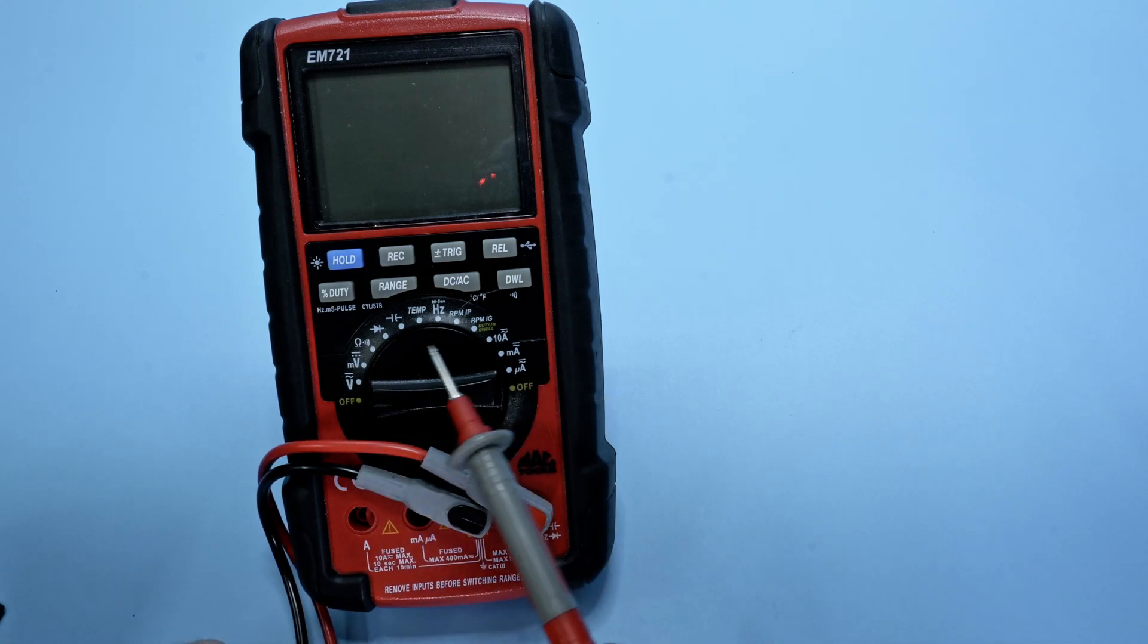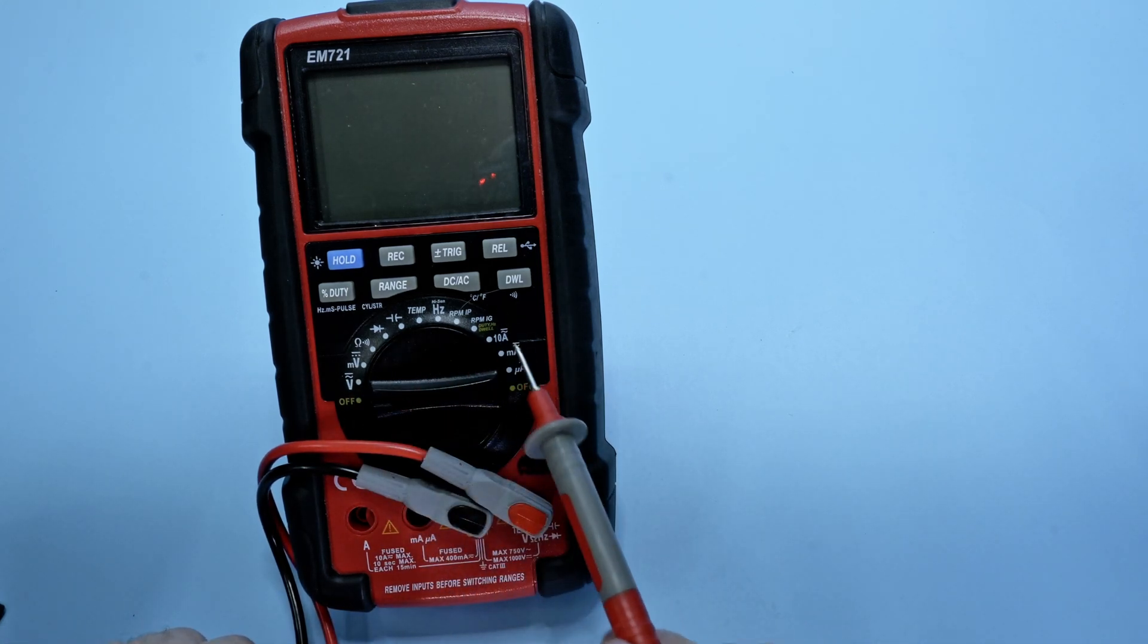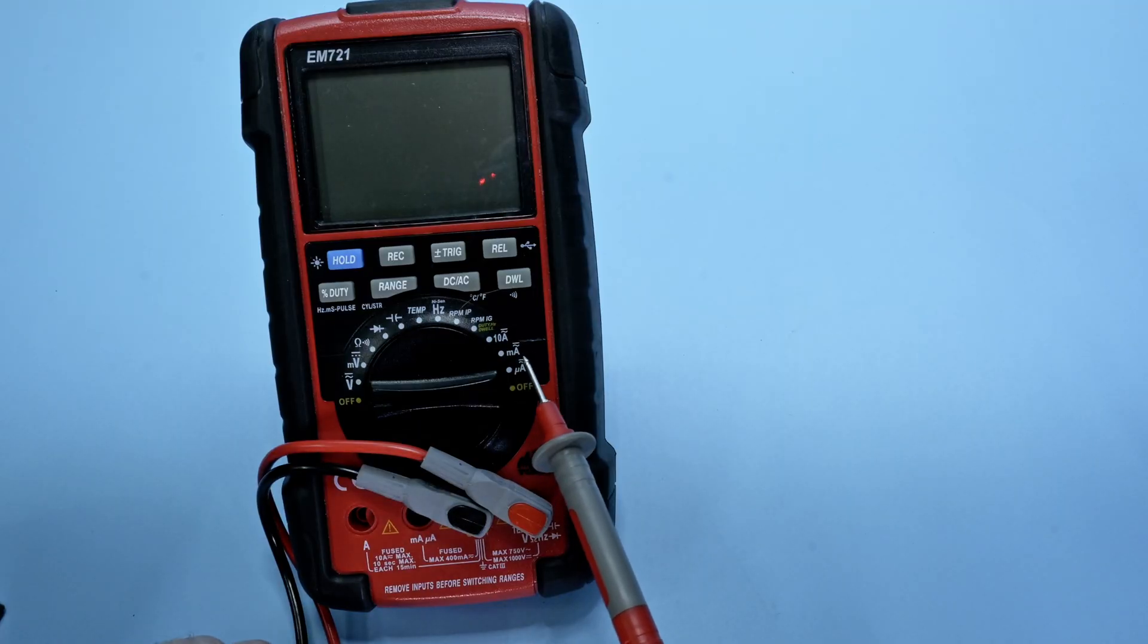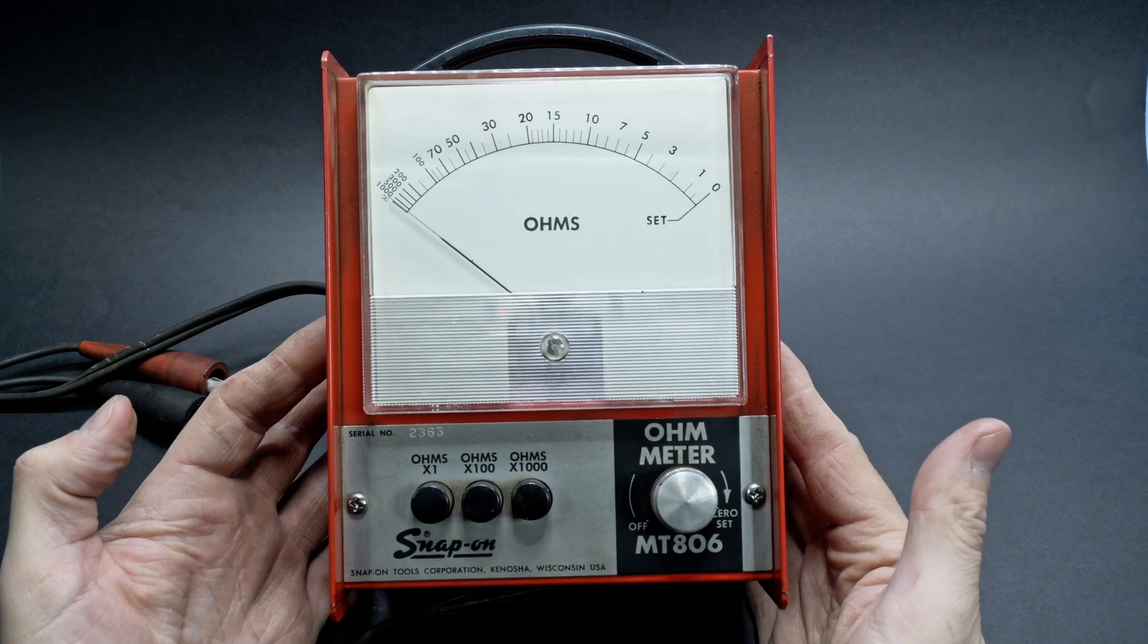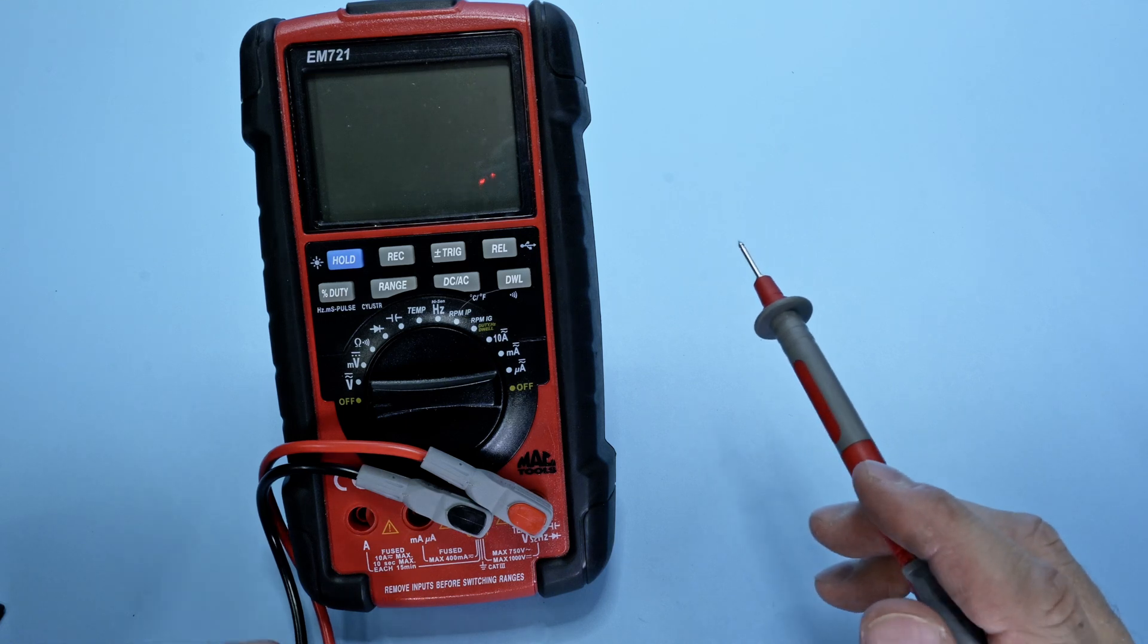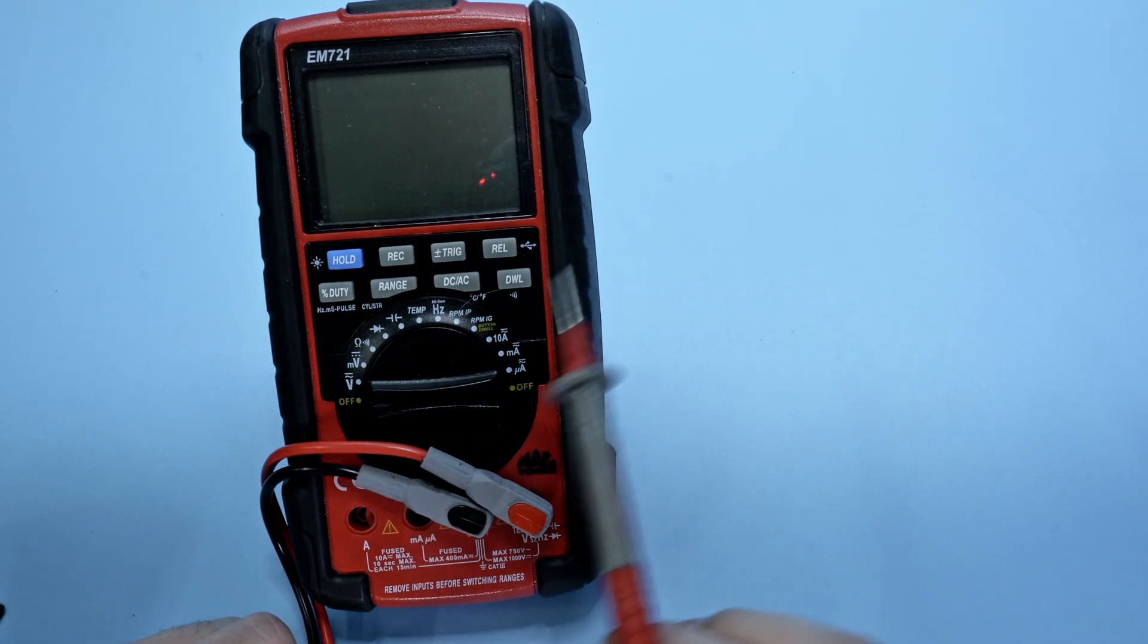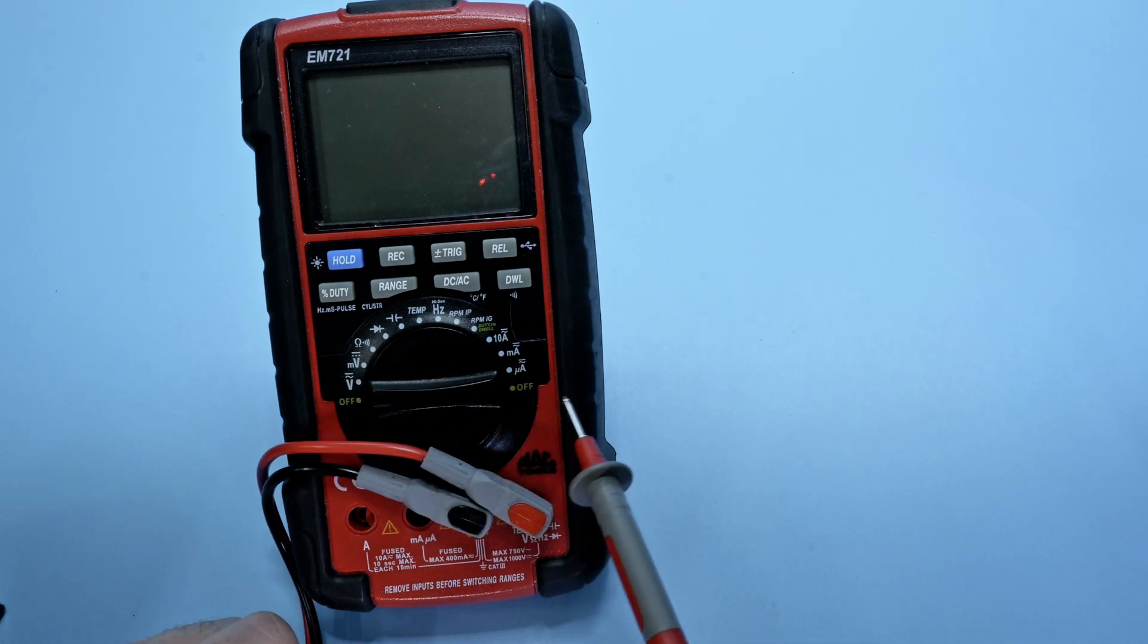Every meter is a little bit different and some of them have a lot of functions such as this one. Dwell, what the hell is dwell? Some of them are a little bit more basic and only have a few functions. It only does ohms. So we're going to look at our primary voltage, resistance, amperage, and then we're going to make another video later down the road on how to use all the other features of a meter.